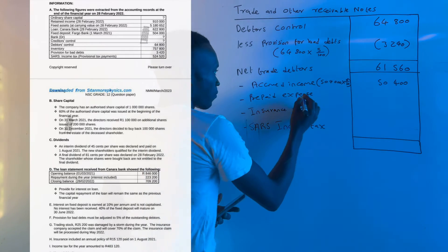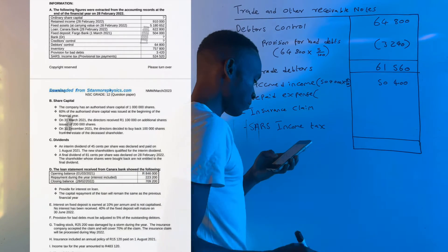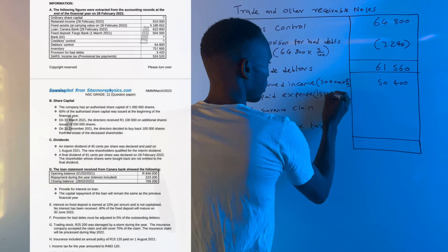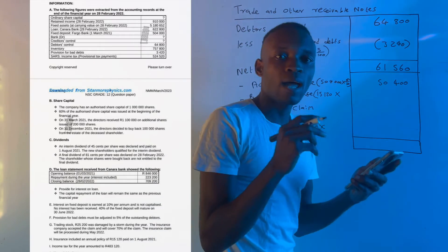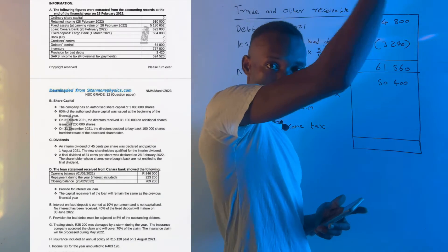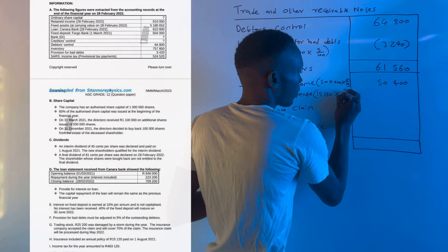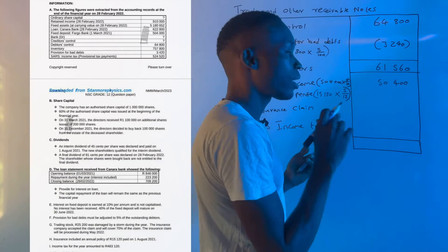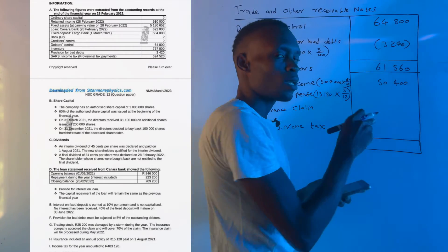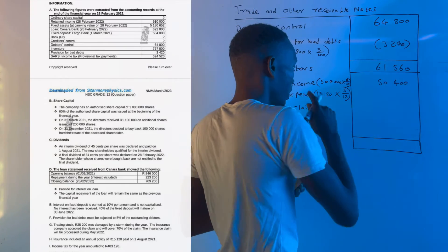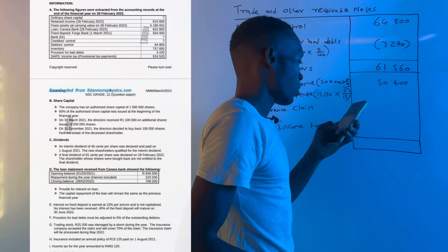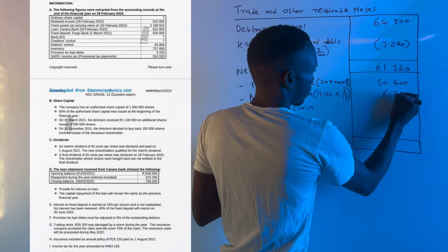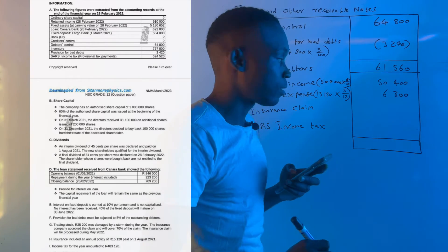The remaining five months are paid in advance for the following period, making them prepaid. We calculate: R15,120 multiplied by 5 divided by 12, which gives a prepaid expense of R6,300. The seven months are recorded under the income statement, and the five prepaid months are recorded here under trade and other receivables.